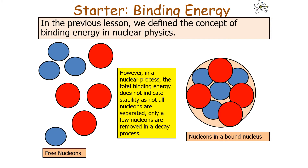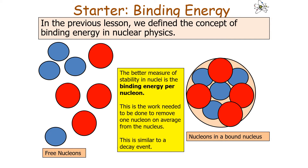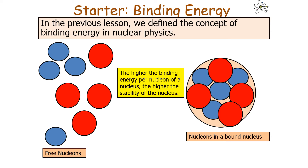In a nuclear process, the total binding energy does not indicate stability as not all nucleons are separated — only a few nucleons are removed in the decay process. So a better measure of stability is the binding energy per nucleon, which is the work done needed to remove one nucleon on average from the nucleus. The higher the binding energy per nucleon, the higher the stability of the nucleus.